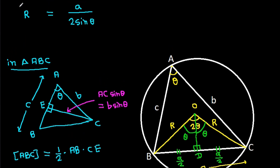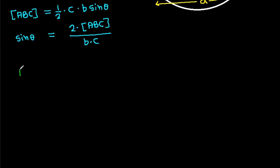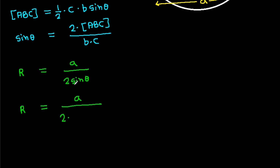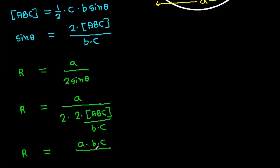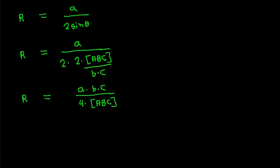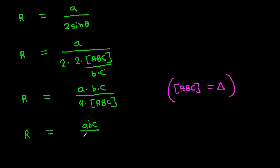We have R equals a divided by 2 sin theta. Substituting sin theta equals 2 times area of ABC divided by b times c, we get R equals a divided by 2 times (2 times area of ABC divided by bc), which simplifies to R equals a times b times c divided by 4 times area of ABC. Suppose the area of ABC is delta. Then R equals abc divided by 4 delta. Hence proved.